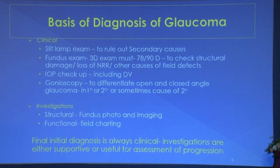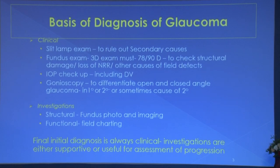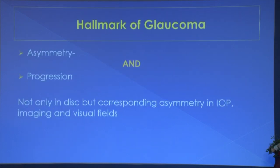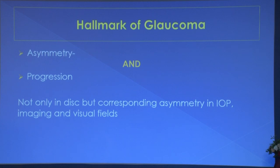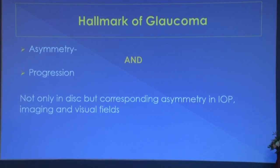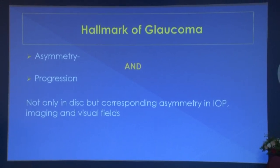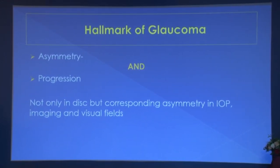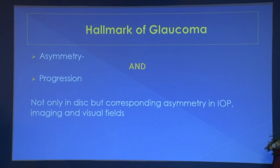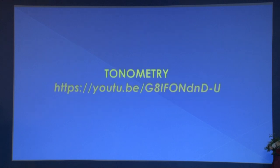Investigations are done structural or functional. Structural tests are fundus photo and imaging. However, the final initial diagnosis is always clinical. Investigations are either supportive or useful for assessment of progression. The hallmark of glaucoma diagnosis is asymmetry, and when you cannot show asymmetry - progression. Asymmetry is important not only in the disc but there has to be corresponding asymmetry in intraocular pressure, imaging, and fields wherever possible. For example, if one eye has IOP of 12 and the other 18 and you are suspicious of glaucoma in the disc of the eye with 12 - the answer is no, it is not glaucoma.